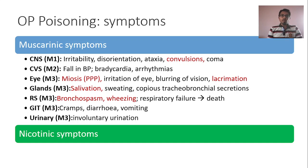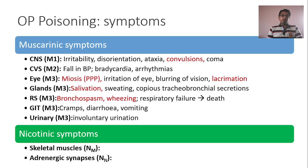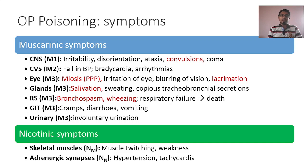Moving on to nicotinic symptoms — there are two types of nicotinic receptors: NM at the neuromuscular junction and NN at various ganglionic sites. Activation of NM receptors in the skeletal muscles will lead to muscle fasciculation, twitching, and weakness. At adrenergic synapses, NN receptors are activated, resulting in increased sympathetic outflow. The major manifestation of this is seen in the cardiovascular system, leading to hypertension and tachycardia.